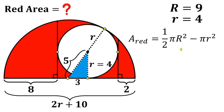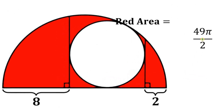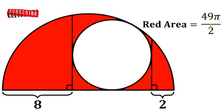We know the value of capital R and small r, so let's substitute: one-half times pi times 9 squared gives us 81π over 2, and pi times 4 squared gives us 16π. Now simplify: 81π over 2 minus 16π. This gives us 49π over 2. Therefore, given this figure, the area of the red region simply equals 49π over 2 square units.